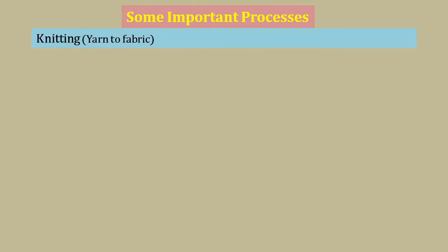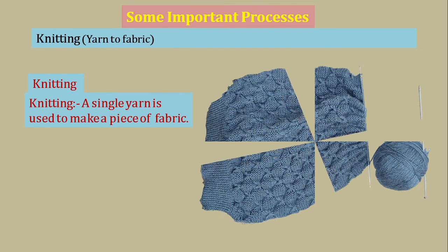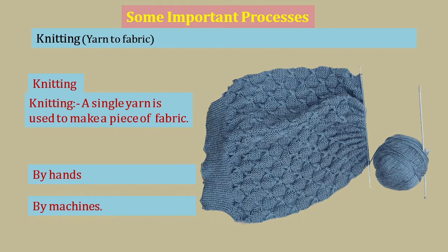One more process is knitting. It is also a process for converting yarn into fabric. In this process, a single yarn is used to make a piece of fabric. The fabric of your sweater or socks is manufactured by this process. Knitting is done by hands or by machines.